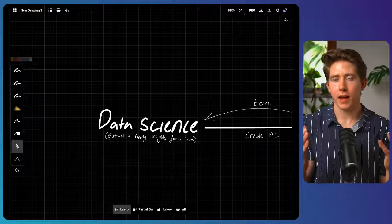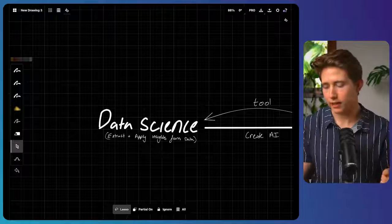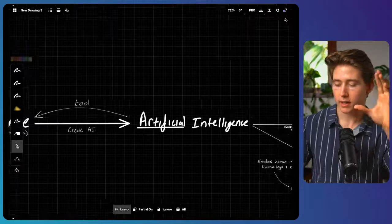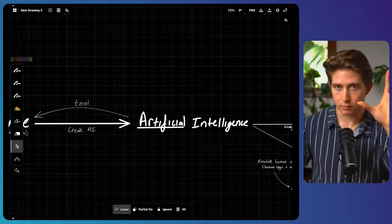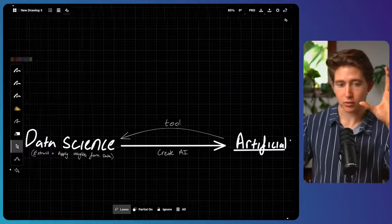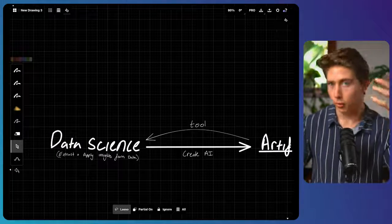Because pretty much everything in the world around us is really just data. And it's all about how do we analyze and use that data. One way that we can actually analyze and utilize data is to create an artificial intelligence model. And then once we've created artificial intelligence, we can then use it as a tool to analyze more data.